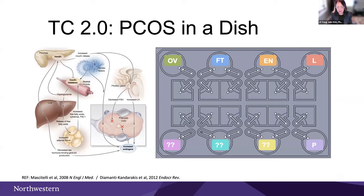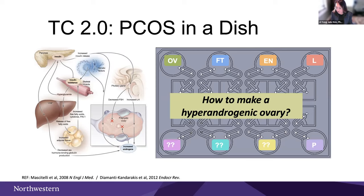This is our PCOS Lattice setup where we have organ systems represented including the ovary, fallopian tube, endometrium, liver, and pancreas — with space to put other tissues as well. We always have to remind ourselves: it's conceptually sensible to put various tissues on this Lattice, but you have to build those tissues in vitro. Our approach is going 3D — we do everything in 3D: we have organoids, spheroids, explants, tissues, etc. We feel the 3D dimension mimics physiology better than 2D for certain things. The first thing we wanted to do was to make a hyperandrogenic ovary — an ovary that makes a lot of androgens, a lot of testosterone.